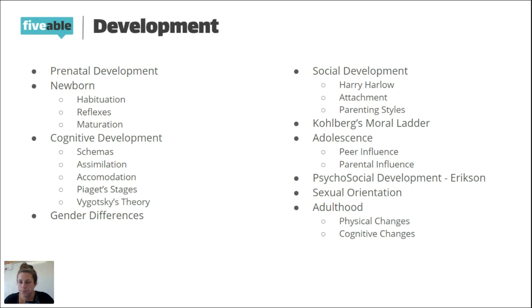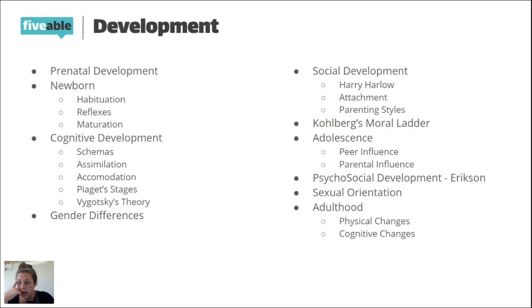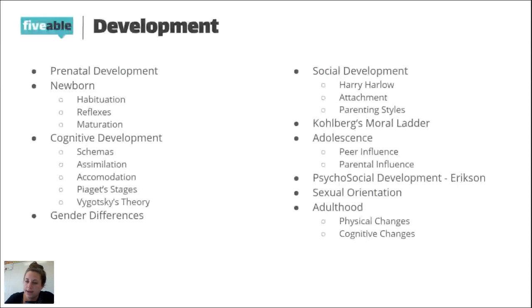Piaget's cognitive stages: first is the sensorimotor stage, where babies interpret the world through sensory and motor skills. Second is preoperational — children start to put words and meanings together but are still self-centered and can't think hypothetically. Third is concrete operational — kids are logical, can do basic math and conservation, but still lack abstract reasoning. Fourth is formal operational — the final stage where we can reason hypothetically and think abstractly.